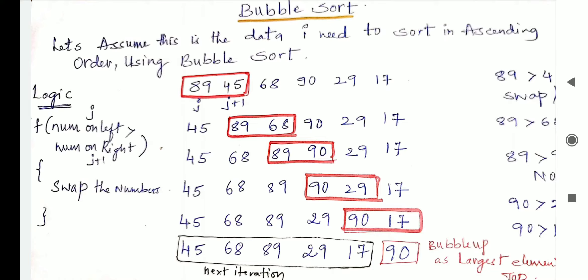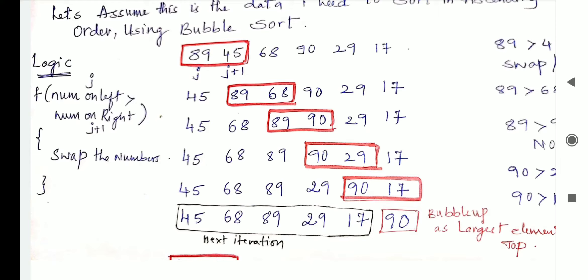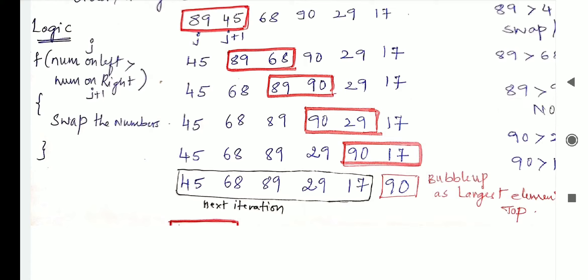89 is greater than 45, so interchange their places. Now 45 goes to 89's place and 89 comes into 45's space — you can see the red box I have circled to show the comparison. Similarly, now 89 is compared with 68. Since 89 is greater than 68, these two numbers are swapped. Next, 89 is compared with 90, but 89 is lesser than 90, so there is no interchange. Then we go for 90 and 29: 90 is greater than 29, so swap the elements.